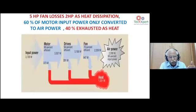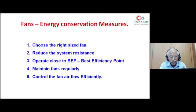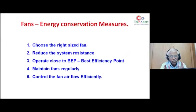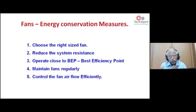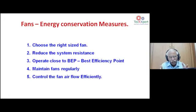Small drops of efficiency, when improved upon, automatically improve the overall system efficiency. There are five macro dimensions for energy conservation in blowers: right-sizing the demand, optimizing system resistance, operating at the best efficiency point on the fan performance curve, maintaining fans regularly, and controlling fan airflow efficiently.